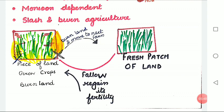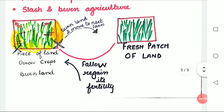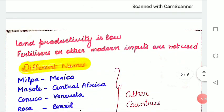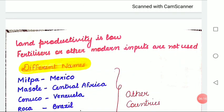Farmers clear a patch of land and produce food crops to sustain their family. When the soil fertility decreases, the farmers shift and clear a fresh patch of land for cultivation. This type of shifting allows nature to replenish the fertility of the soil through natural processes. Land productivity is low in this type of agriculture and farmers do not use fertilizers or other modern inputs.